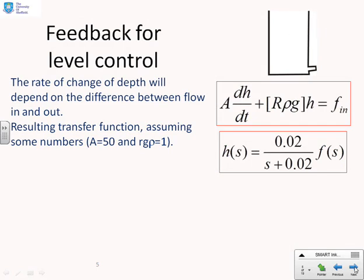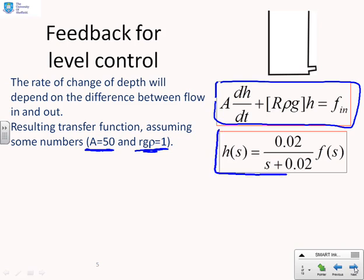If we combine those two equations together we get that the depth in the tank is given by A dh/dt plus rρg times h equals f_in. Now we're going to assume we've got some simplified numbers A=50 and rρg=1, so if I substitute those into the model and take Laplace transforms I end up with this model: the depth h(s) equals a transfer function 0.02 over s plus 0.02 times f(s) where f(s) is the Laplace transform of the input flow.